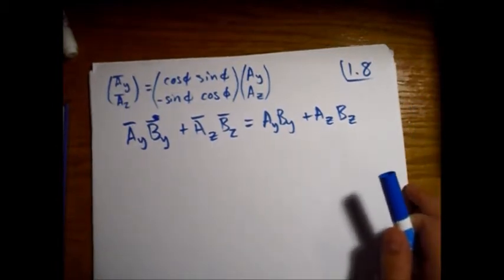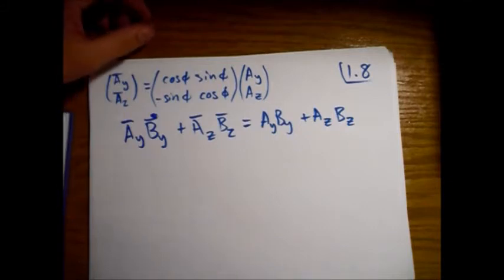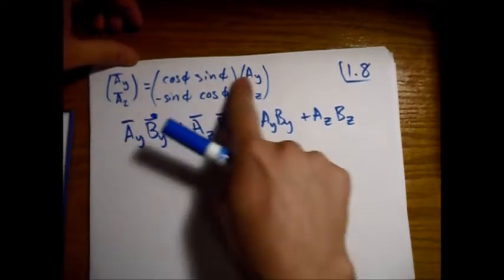Okay, this is Griffith's Classical Mechanics, problem 1.8, starting with part A. Prove that the two-dimensional rotation matrix in equation 1.29, which I've written right here,